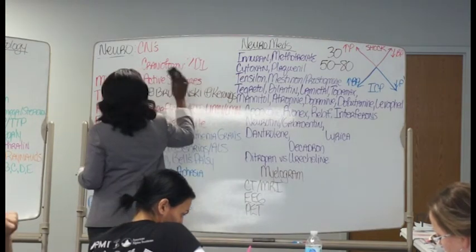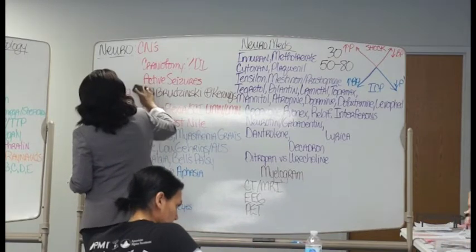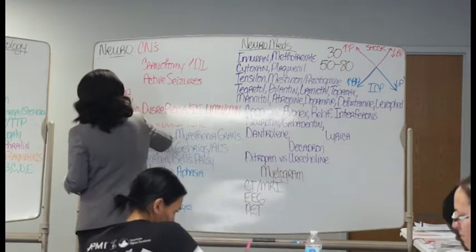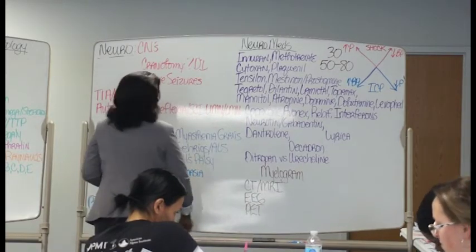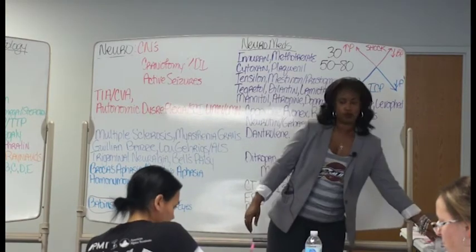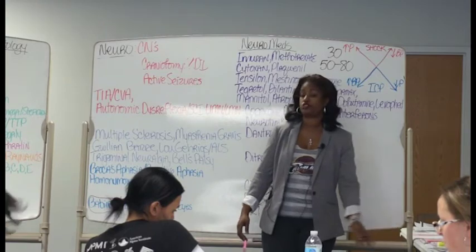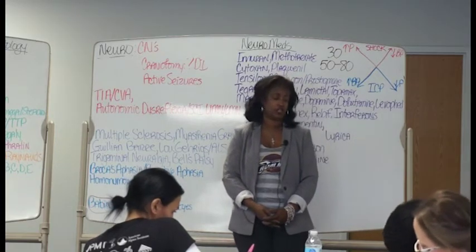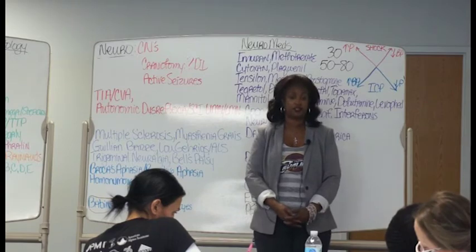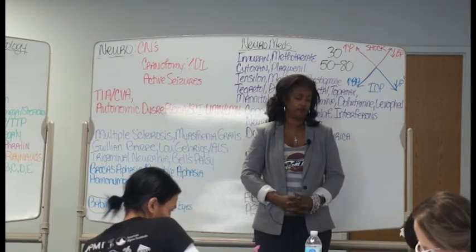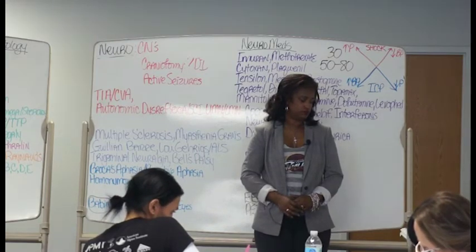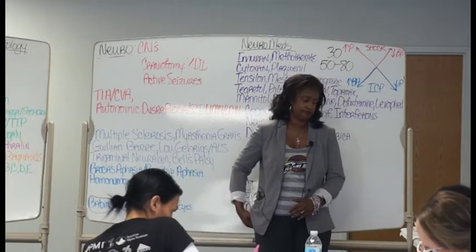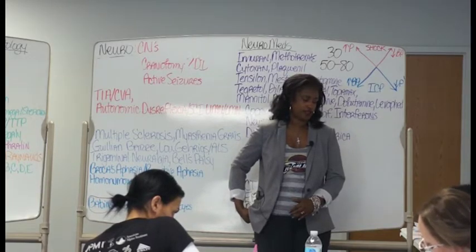Meningitis is a condition of college kids because they're in such close quarters, and the average age of meningitis is 18. Yes, there is a vaccine, but many kids don't get it. If someone had a college roommate with bacterial meningitis, they're going to be treated with rifampin or Cipro — write them both down. Close contacts with bacterial meningitis get rifampin or Cipro. The patient is considered no longer contagious after 24 hours of antibiotics.